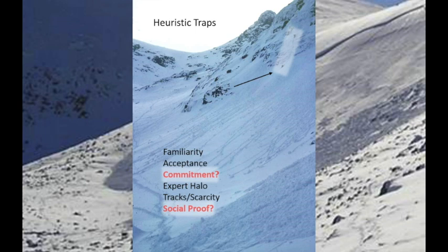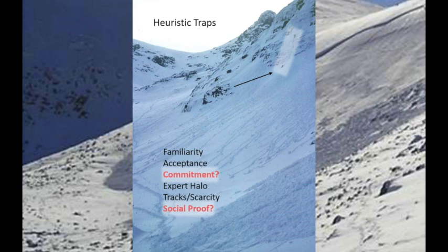These influences on our decision making are called human factors. There are a lot of cognitive biases that influence our decisions, and mainly that goes unnoticed and unchecked - and is actually a good thing in normal life. These mental rules of thumb are called heuristics. They happen unconsciously and help us make decisions without too much effort. However, in the avalanche world it has been recognised that these heuristics can actually get us into trouble, and in that case it's called a heuristic trap.